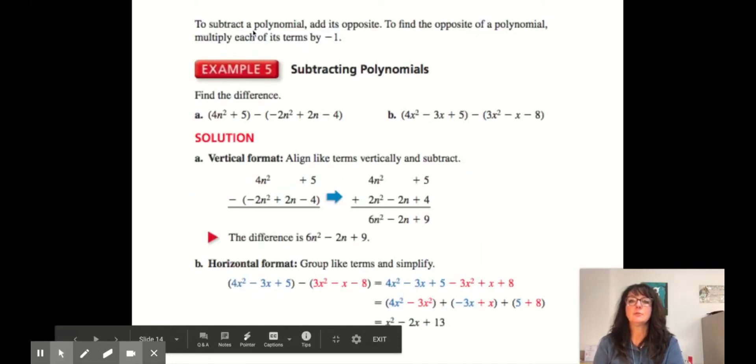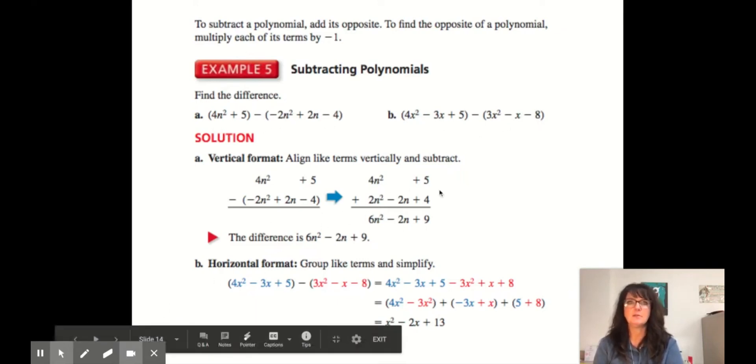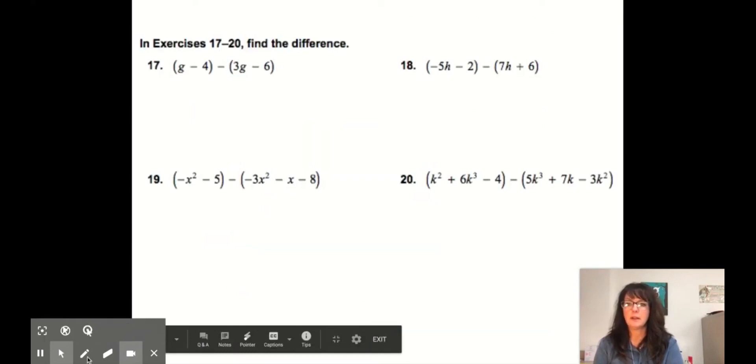Now to subtract a polynomial, we want to add its opposite. To find the opposite of a polynomial, multiply each of its terms by negative 1. So this is a little different. So since this is subtraction, it's like we're distributing a negative 1. So we do have to take that step to rewrite this.